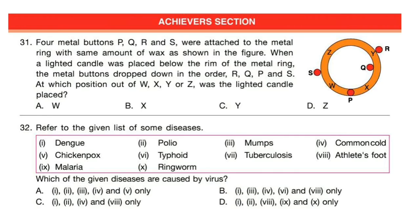Next section is the Achiever section — each question here carries two marks. Question 31: Four metal buttons P, Q, R and S were attached to a metal ring with the same amount of wax. When a lighted candle was placed below the rim, the buttons dropped in the order R, Q, P and S. At which position — W, X, Y or Z — was the candle placed? Correct answer is option C. If the candle is placed at position Y, the first button to fall is R, then Q, then P, and last is S.